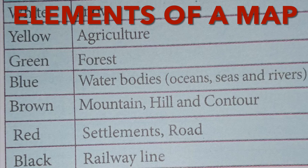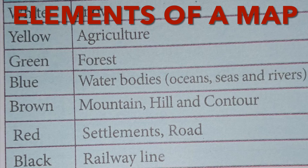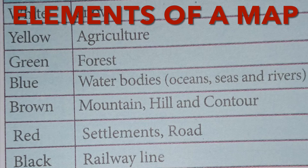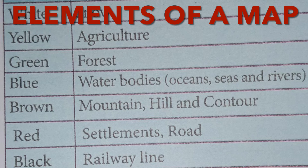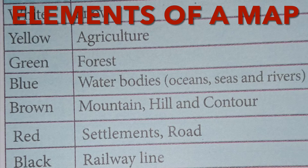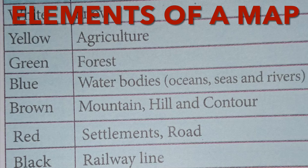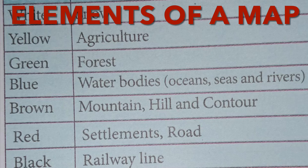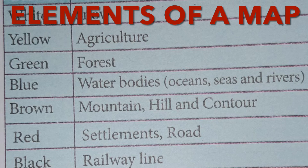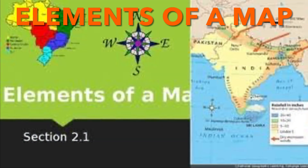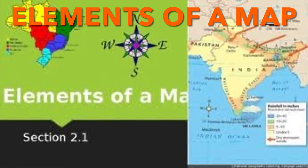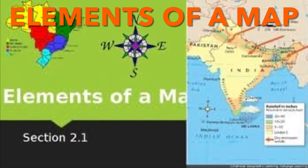Scale: the scale can be represented as 1 cm equal to 10 km, meaning 1 cm on the map equals 10 km on the ground. Legend or key: it explains the symbols used on the map to represent various physical and cultural features. For example, a major road is shown as a thick line and a minor road as a thin line in red; a lake is shown in blue and wetland in green.